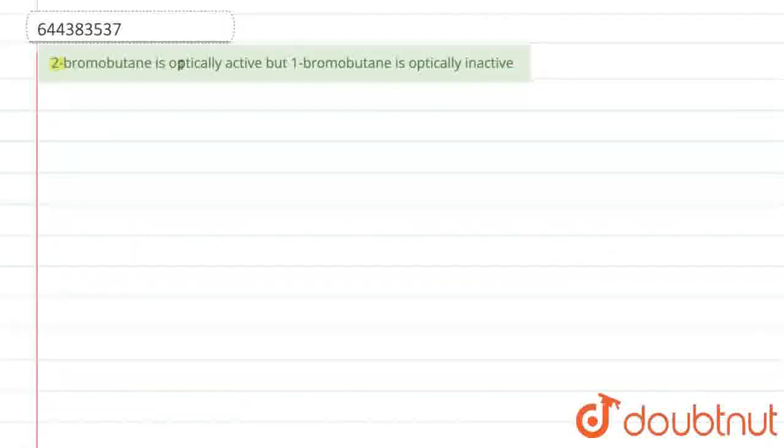Hello everyone, so the question is saying 2-bromobutane is optically active, but 1-bromobutane is optically inactive. So we have to give reason for that.